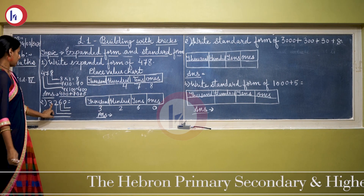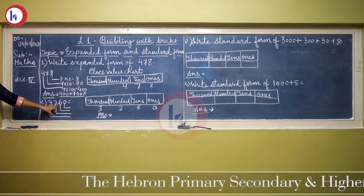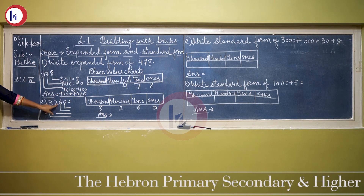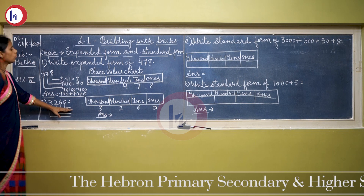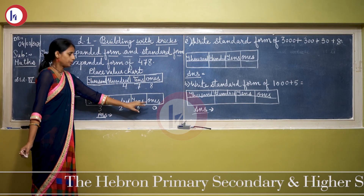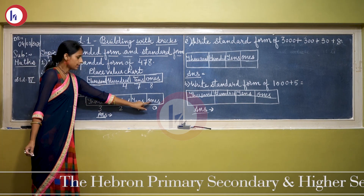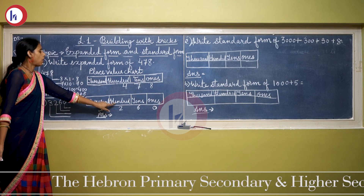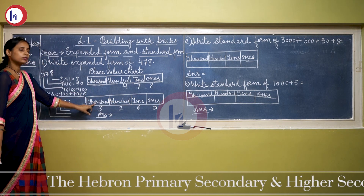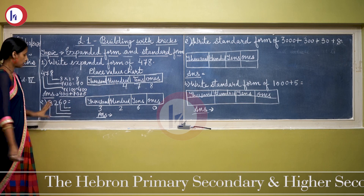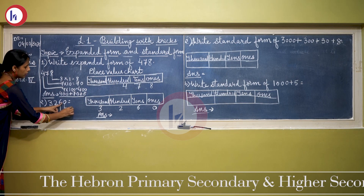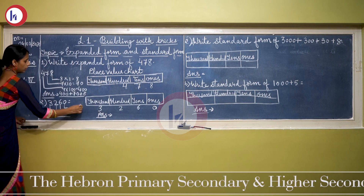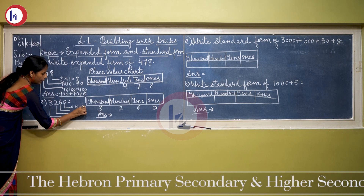Now see the next example: 3260. We have to find the position of each digit. 0 is on the ones place, 6 is on the tens place, 2 is on the hundreds place, and 3 is on the thousands place. Now again we multiply each digit by its place value. 0 multiplied by 1 because 0 is on the ones place — the answer will be 0.